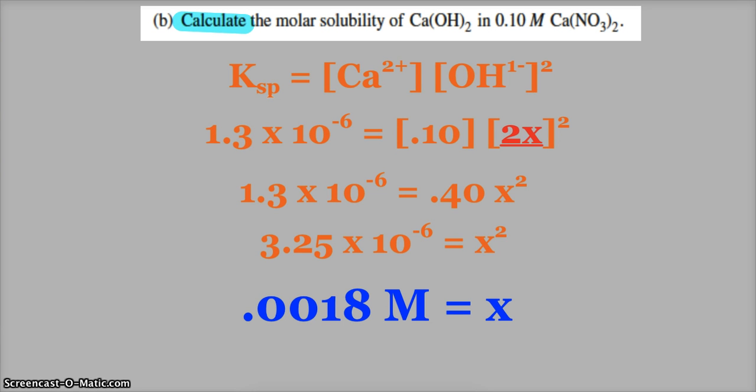It said molar solubility. That's what's in the brackets, molarity. I had 0.10 molar and I had my Ksp of 1.3 times 10 to the negative 6, so I'm only given 2 sig figs. You could also answer 1.8 times 10 to the negative 3, but either way, that is the molar solubility of the calcium hydroxide in the calcium nitrate solution.